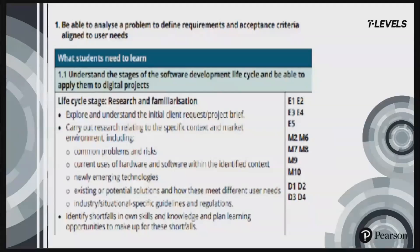Now we'll break down the skill further. Here you can see the first part of this breakdown: lifecycle stage, research and familiarisation. In the specification, PO1 is actually broken down into seven parts. Each of these parts is then broken down again into several bullets and sub-bullets, giving you elaborated content for each part of the knowledge or skill statement. In the right-hand column, we've included the skills from the general competency framework that students will need to have the opportunity to demonstrate. You will see E1, E2, M2, D2, etc. — these reference the English, Maths and Digital skills from the framework. You will find a full list of the competencies at the front of the specification.